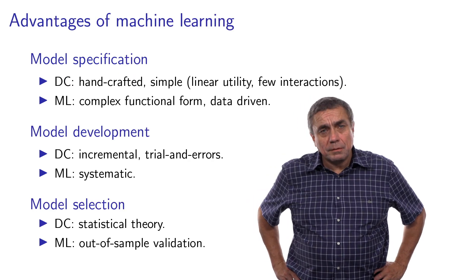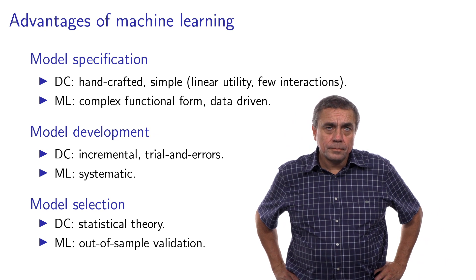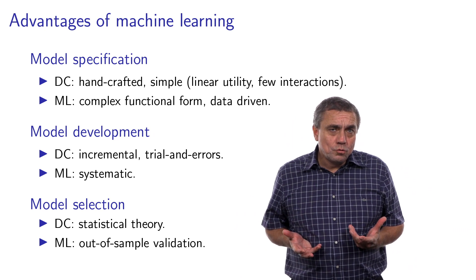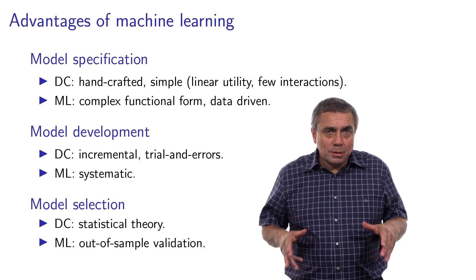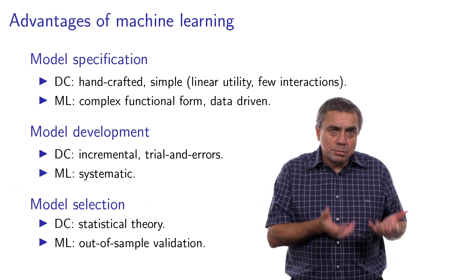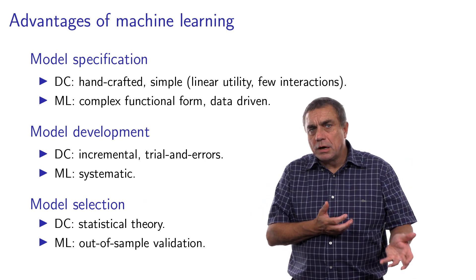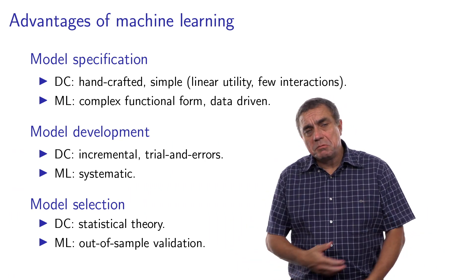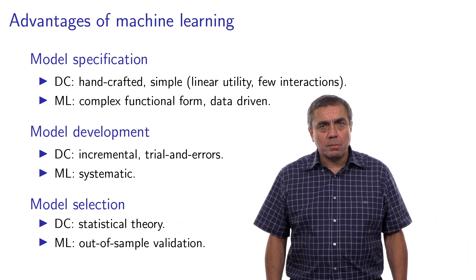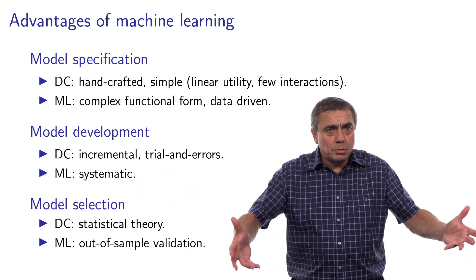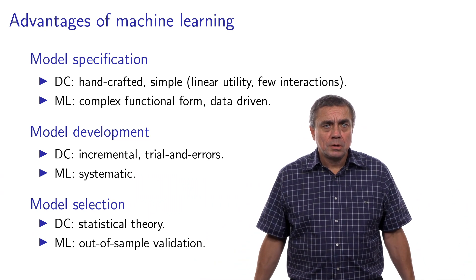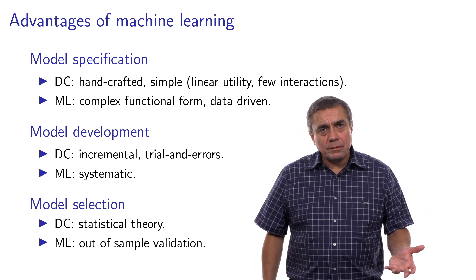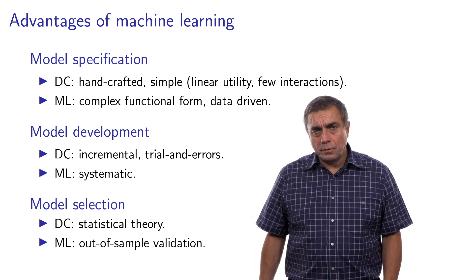Machine learning has several advantages. First, in terms of model specification, when you do discrete choice, you have to handcraft manually the specification. Usually you use simple specification, you use linear utility, you use relatively few interactions. In machine learning, they use complex functional form, and it's purely data-driven. You don't have to decide about the specification of the model. You just define the number of layers in a neural network, and the data will basically drive the model towards the final specification.